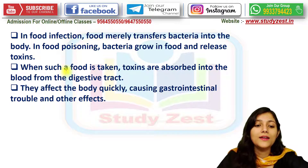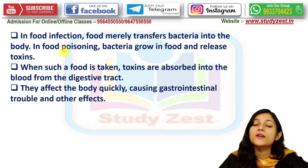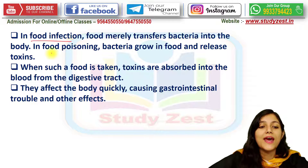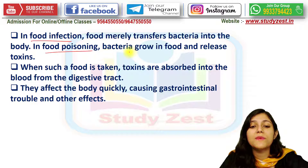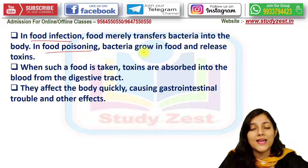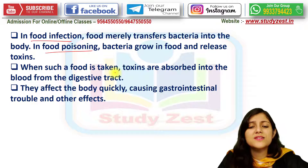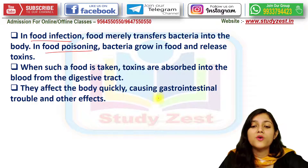There is an important difference between food infection and food poisoning. In food infection, food merely transfers bacteria into the body. In food poisoning, bacteria grow in the food and release toxins. When such poisoned or infected food is consumed, the toxins are absorbed into the blood from the digestive tract and quickly cause gastrointestinal trouble and other effects.